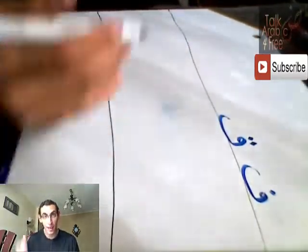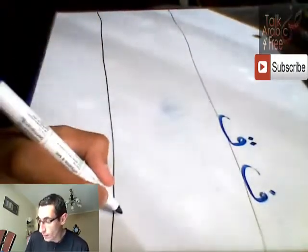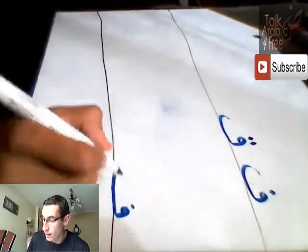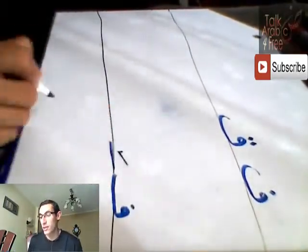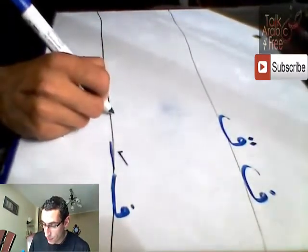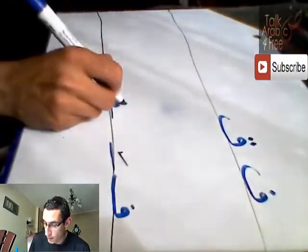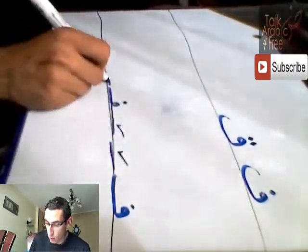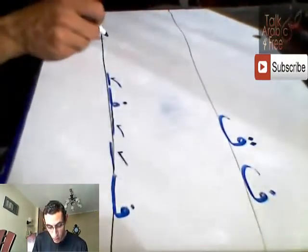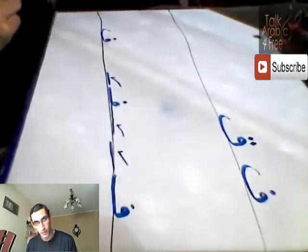Let's learn how to write fa and qaf in the beginning, middle, and end of each word. So fa in the beginning, anything can be written after it. Fa in the middle, same thing - anything before, anything after. It's all a matter of a circle with a dot.